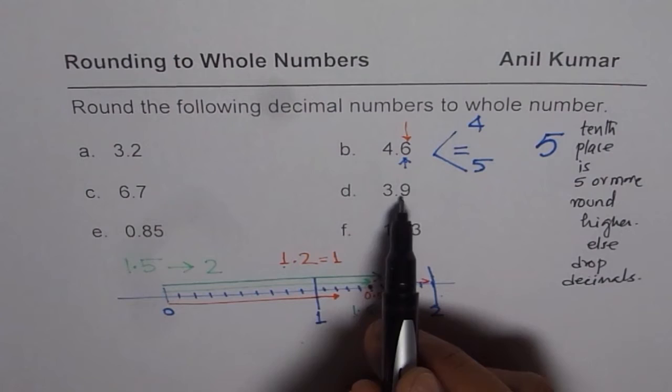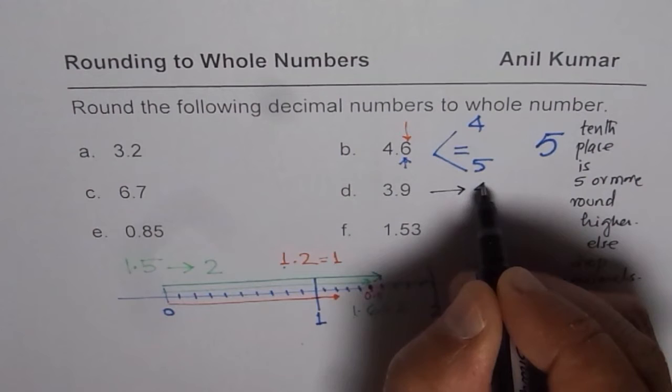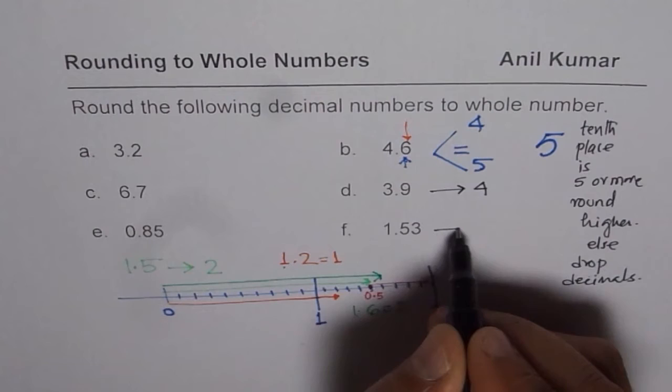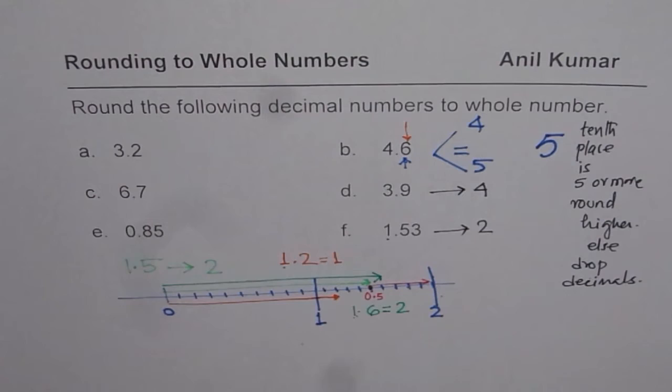3.9, 3.9 is much more than 5, so this will round to number 4. 1.53, 5 is also higher and therefore, it will round to 2, correct? 1 more than 1.